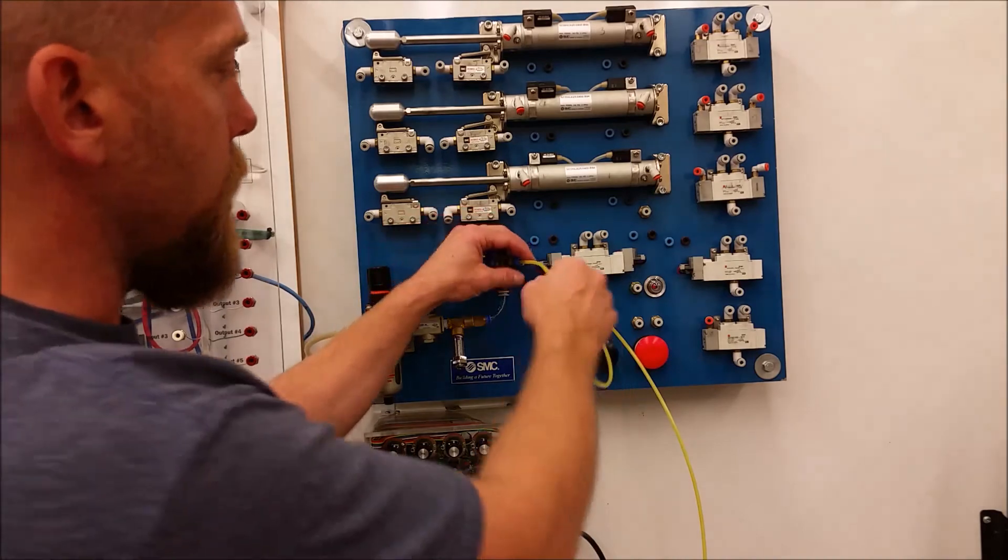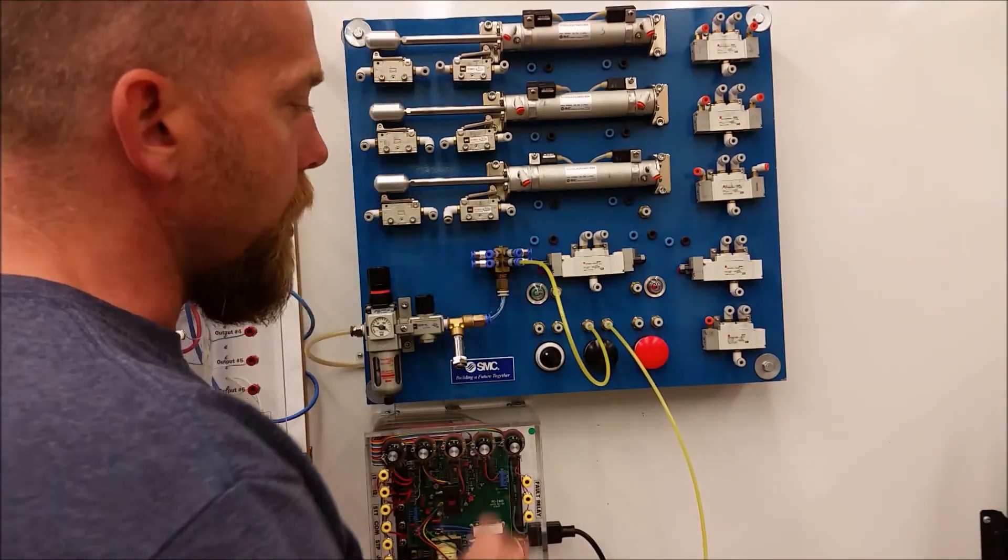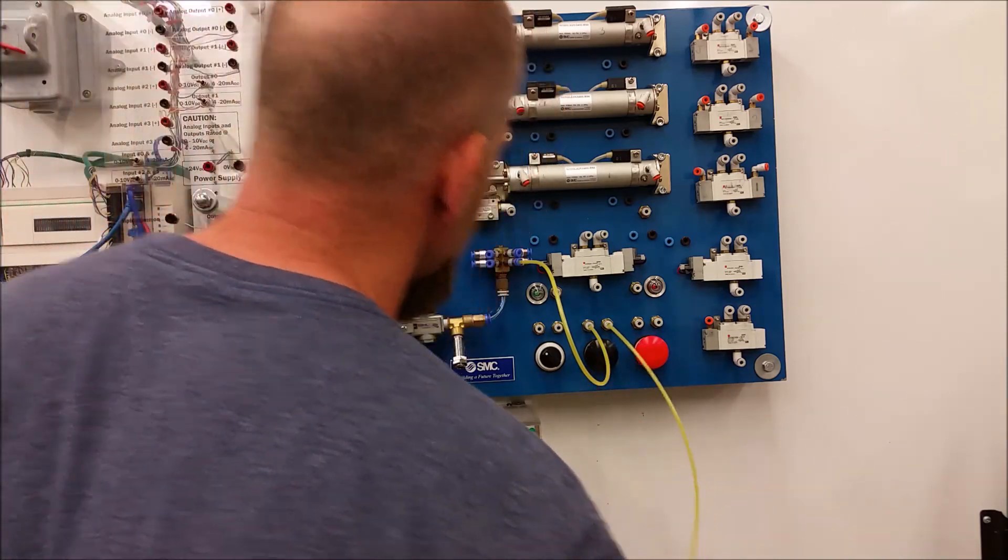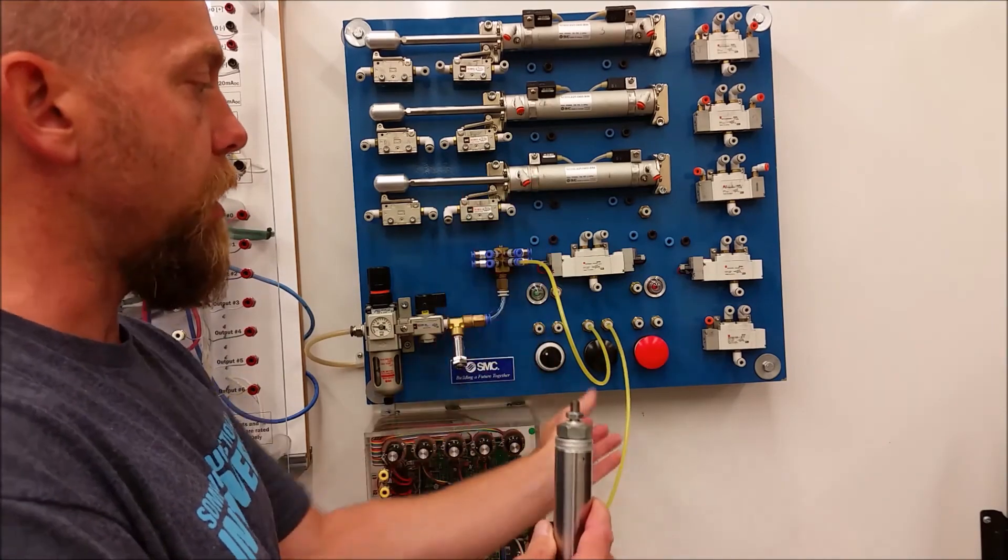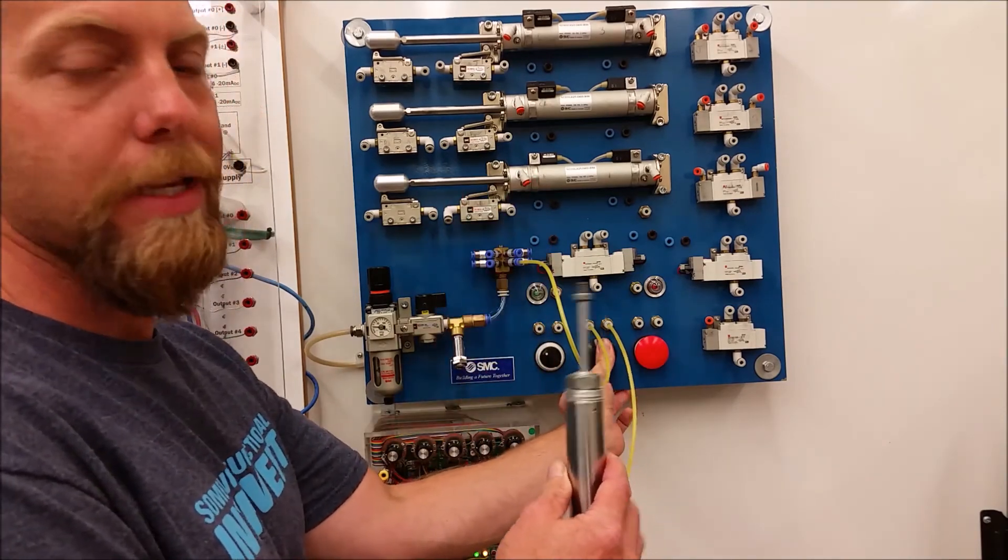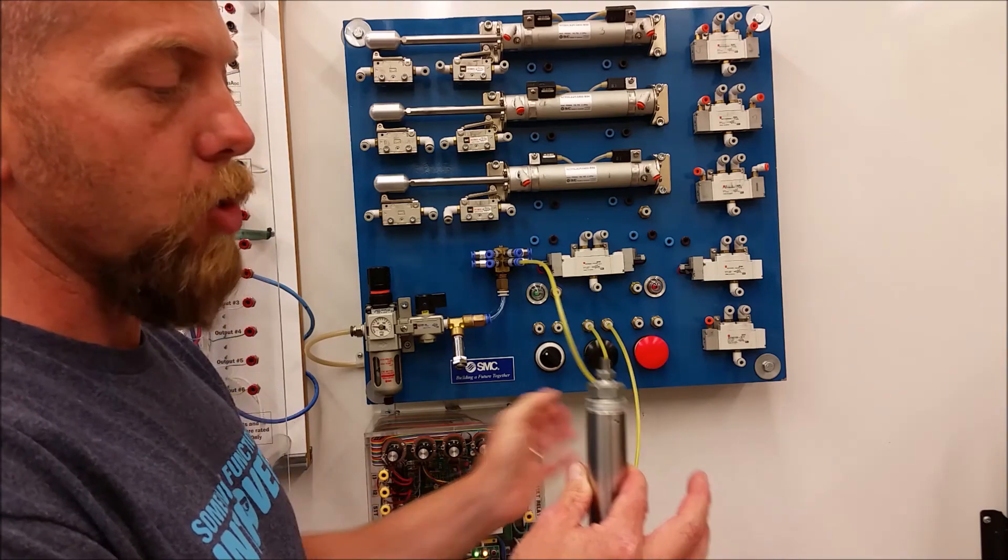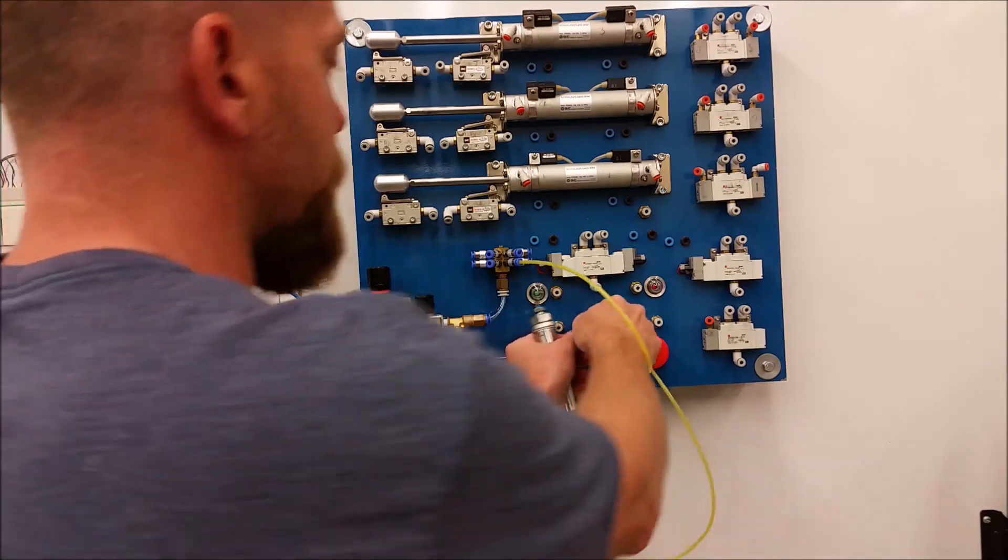Lab number 2 is just as simple as lab number 1. But again, we're going from a normally closed push button in that it was normally closed to the passage of air. Once we press this, then it actually opens and allows that air to travel through. So the opposite of what an electrical normally closed would mean. It's normally closed to the passage of air.